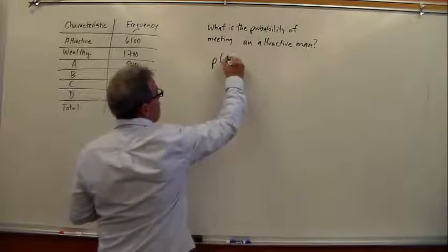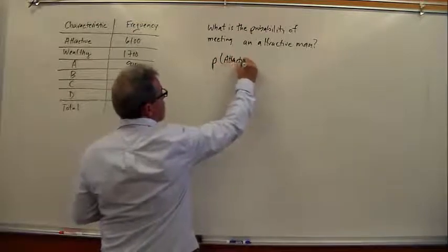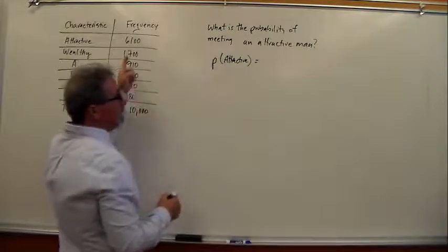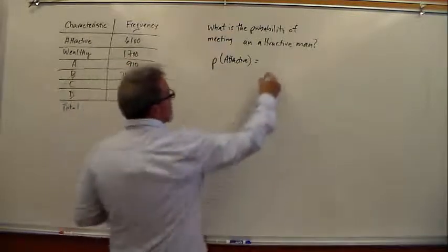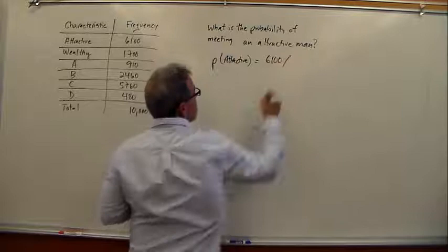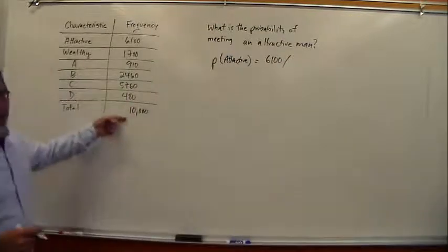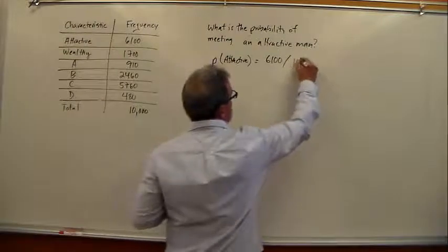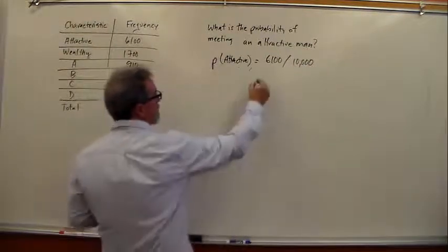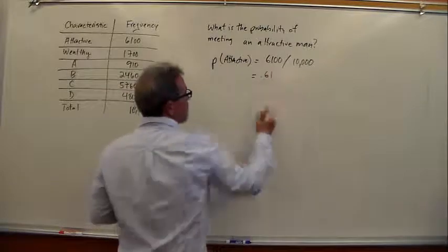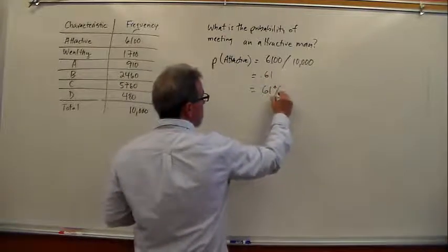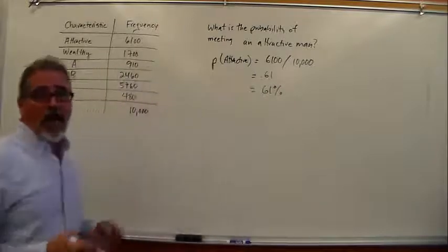We want the probability of attractive. It is simply the frequency of how often that can occur, 6,100 divided by the total frequency. What are the chances? 10,000. And then, in essence, calculating the probability, 0.61. Or, you have a 61% chance of that happening.